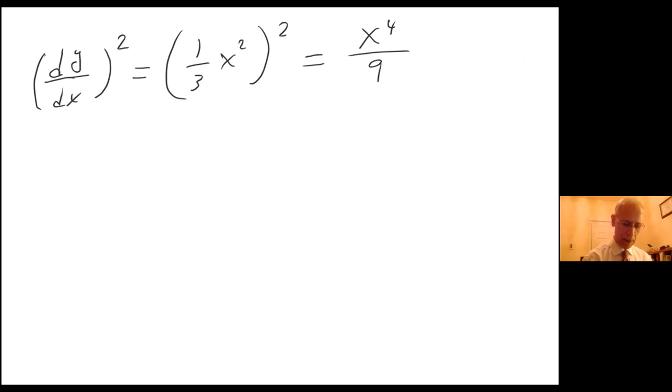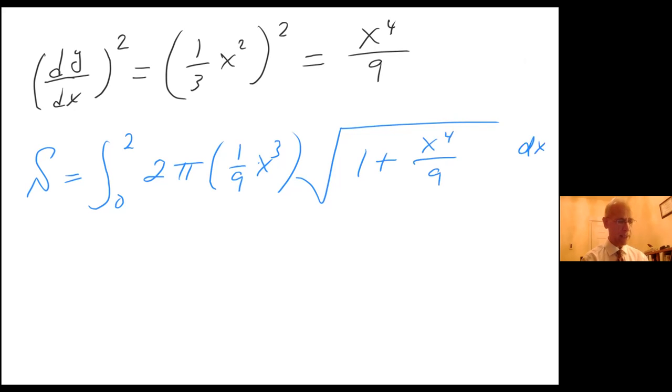And so I can claim now that the surface area equals from zero to two, 2π times one ninth x cubed, times square root of one plus x to the fourth over nine, all that dx.